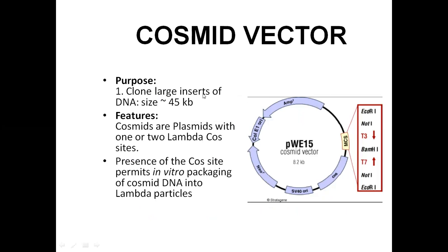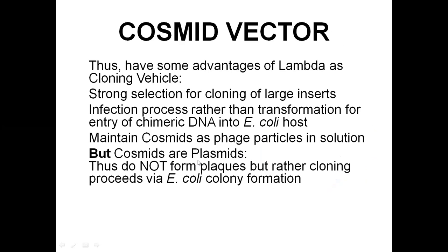Cosmids are used to clone large inserts of DNA — size of up to 45 KB. Cosmids are hybrids between plasmids and Bacteriophage Lambda DNA. The plasmid which contains the COS sites is called a cosmid. Presence of the COS sites permits in vitro packaging of cosmid DNA into Lambda particles. The cosmid contains the ampicillin resistance gene, different resistance enzyme markers, COS sites, and multiple cloning sites where we can incorporate the gene of interest.